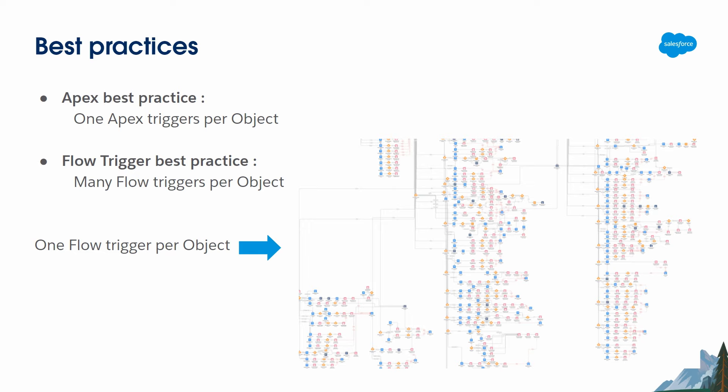We also have some best practices. When working with Apex triggers, please use one Apex trigger per object — this is one of the golden rules. When working with flows, please create many smaller flows and use sub-flows rather than building one massive flow.